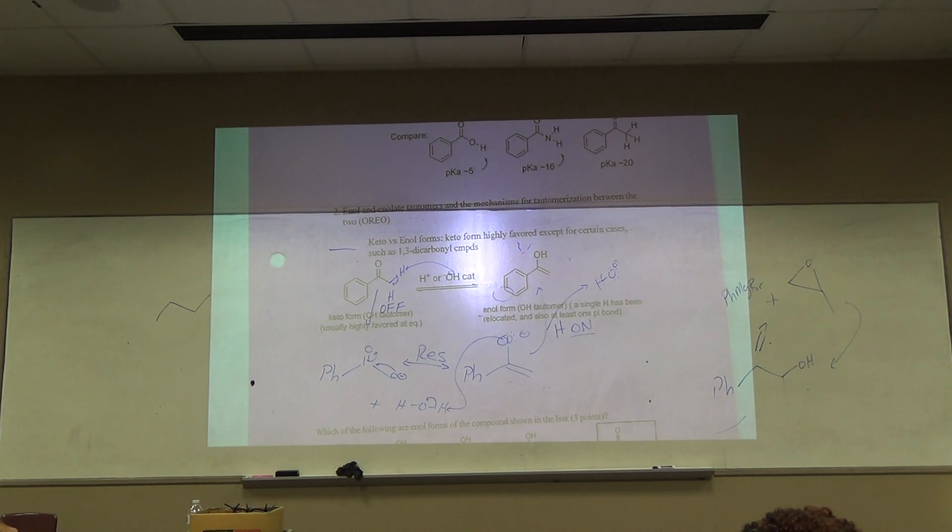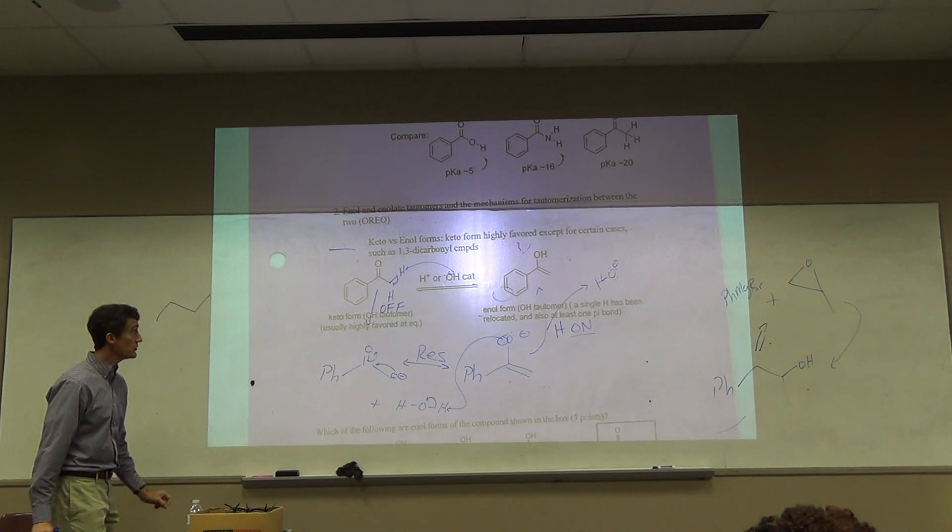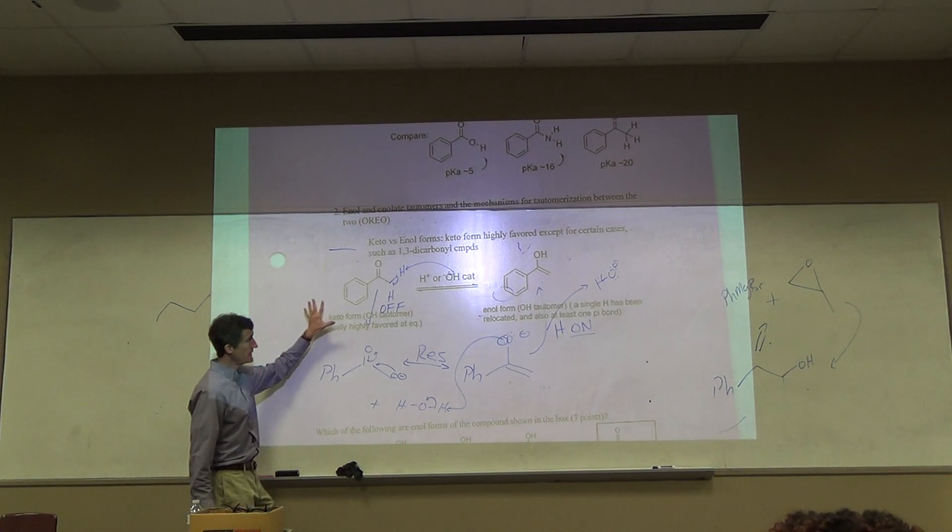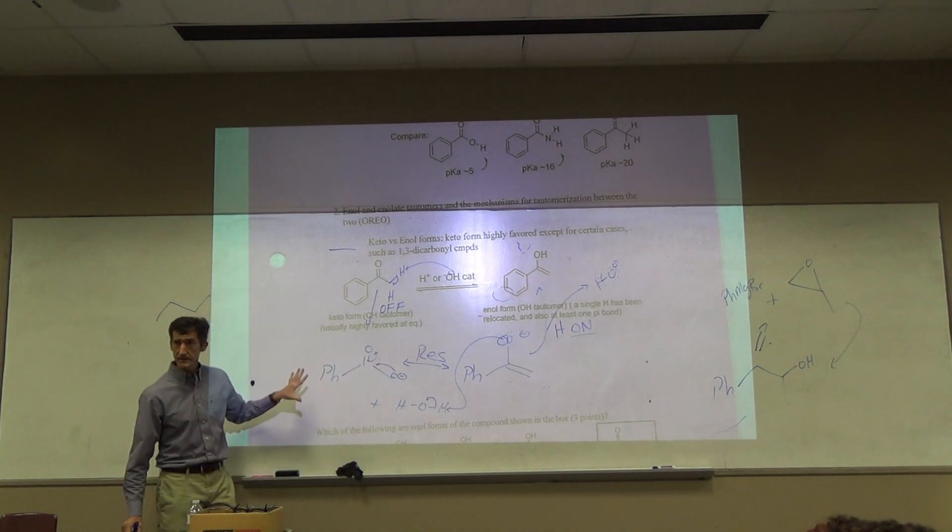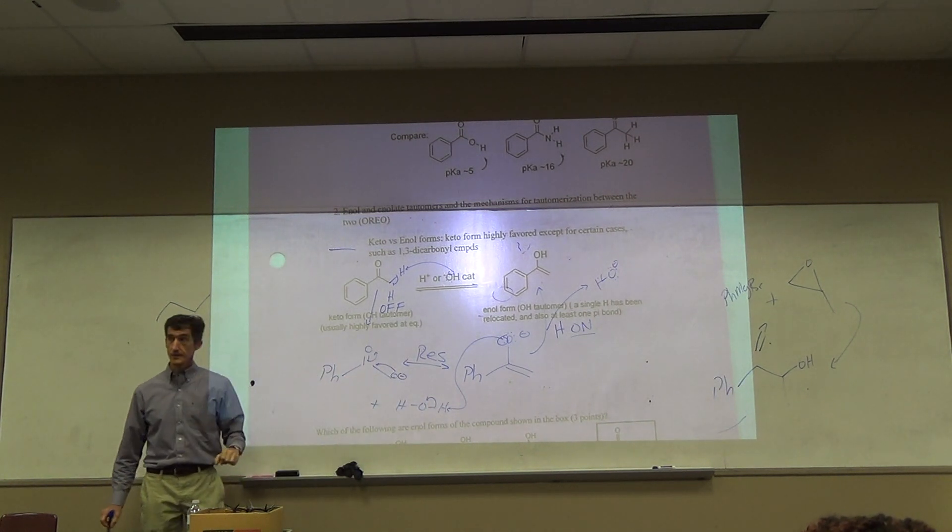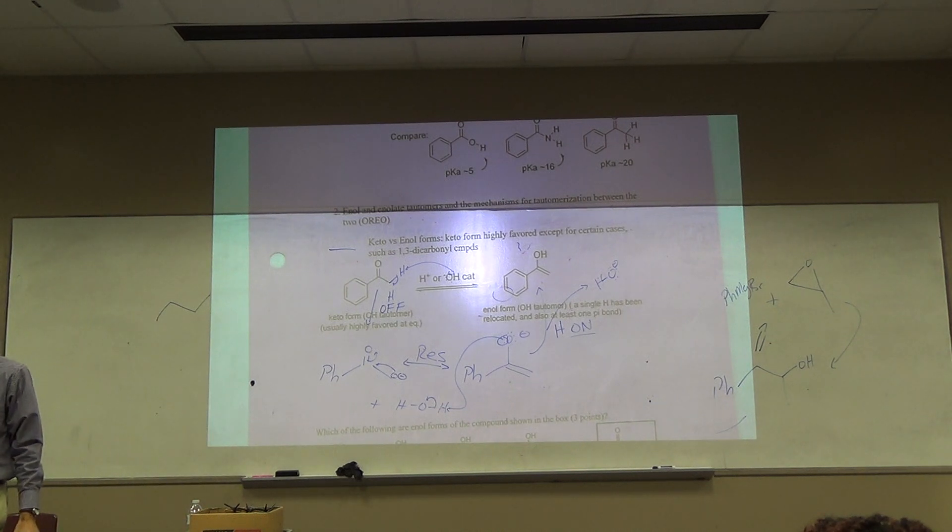As we've said before, if you're under basic conditions your intermediates in your mechanism tend to be negatively charged. If you're under acidic conditions your intermediates in your mechanisms are going to be positively charged. Try it on your own. Try it on your own. OREO under acidic conditions.